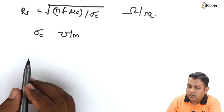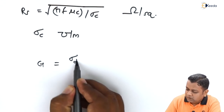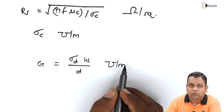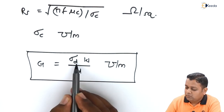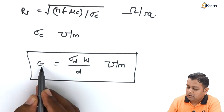Finally, the distributed parameter for conductance, represented by capital G, is equal to σ_D · W / d, measured in siemens per meter. In the conductance formula, σ_D refers to the conductivity value of the dielectric material. After representing the equations for inductance L, capacitance C, resistance R, and conductance G — called distributed parameters because all are measured per unit length — the corresponding units are: henries per meter, farads per meter, ohms per meter, and siemens per meter.